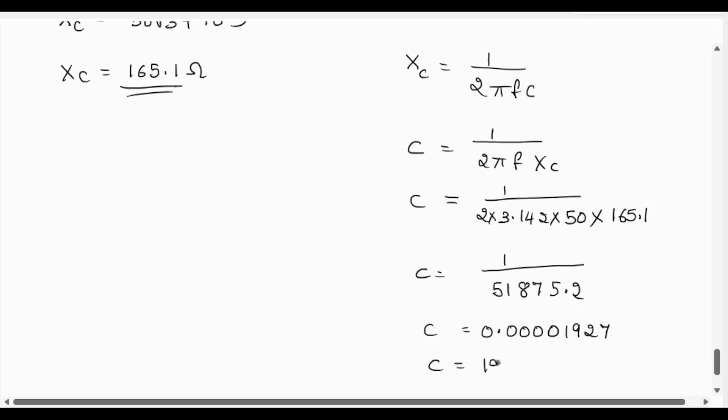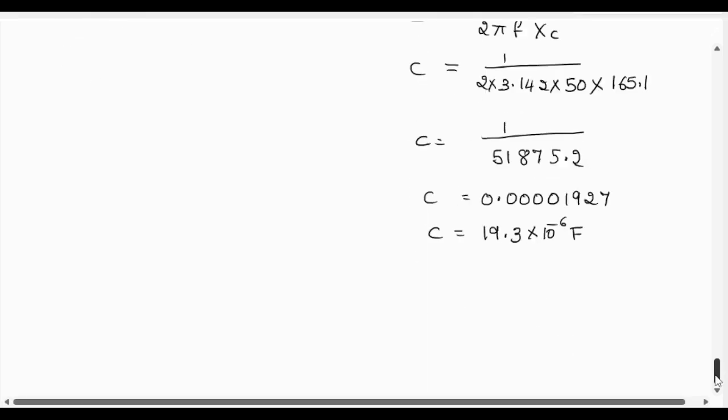Or C can be written as 19.2 or 19.3 × 10⁻⁶ farad, or C = 19.3 microfarad. So this is the value of the capacitance of the capacitor.